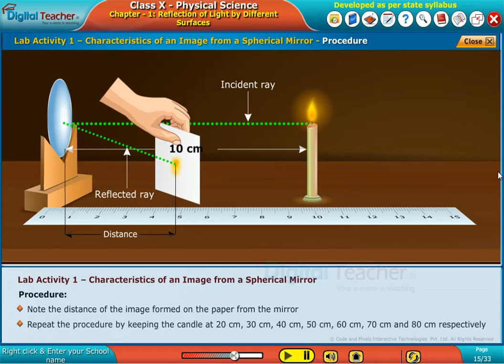Repeat the procedure by keeping the candle at 20 centimeters, 30 centimeters, 40 centimeters, 50 centimeters, 60 centimeters, 70 centimeters, and 80 centimeters respectively. Note the observations accordingly.